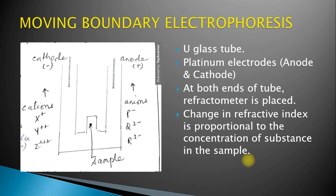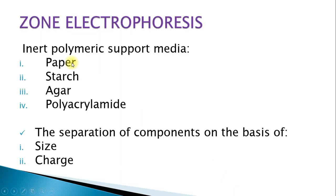The disadvantage of moving boundary electrophoresis is that resolution is very low, and it is not suitable for separating and analyzing complex biological samples. Therefore, zone electrophoresis is usually followed. In zone electrophoresis there is an inert support medium made up of polymers. Different types include paper, starch, agar, and polyacrylamide. Separation in zone electrophoresis is on the basis of size and charge.